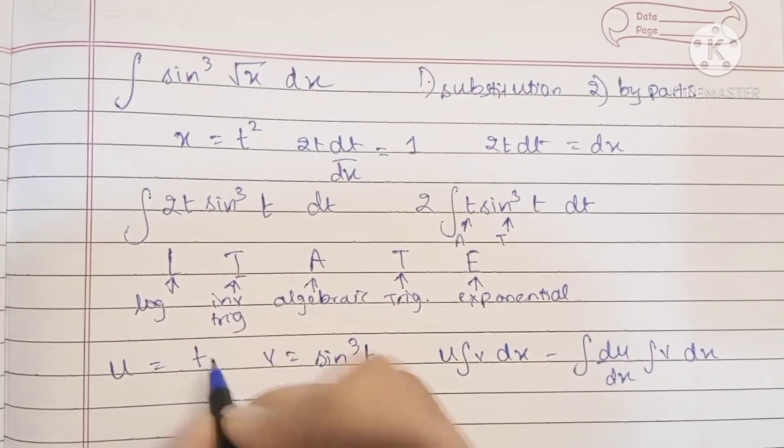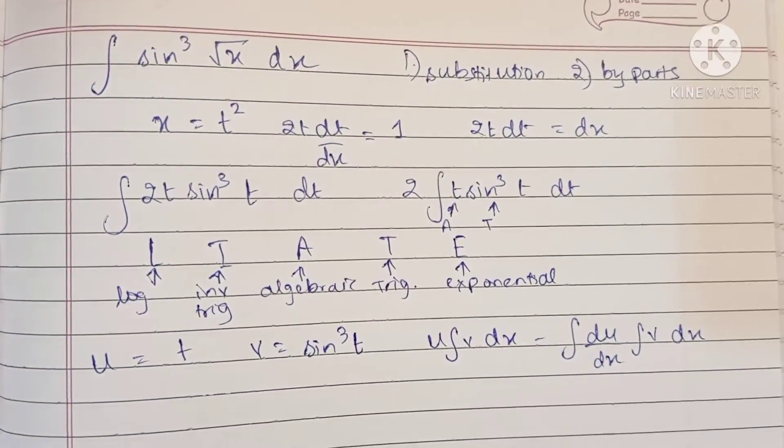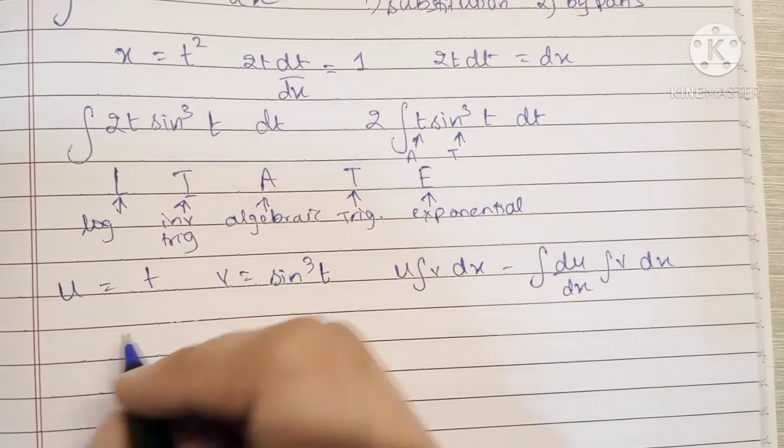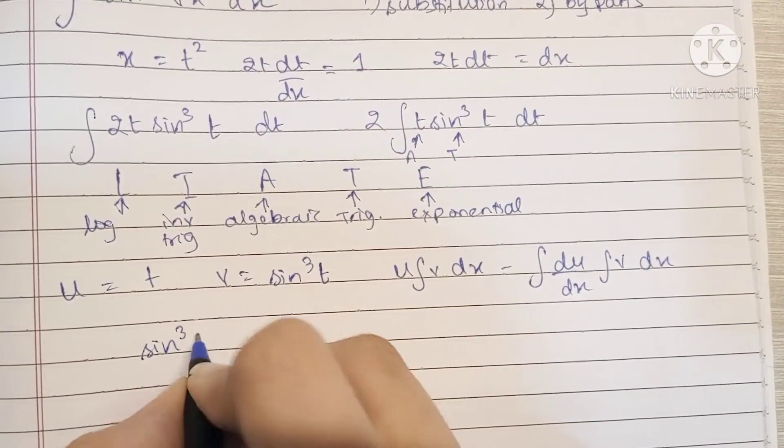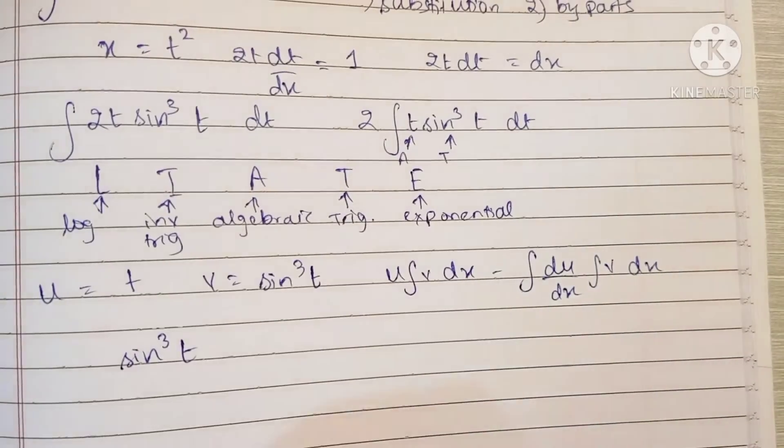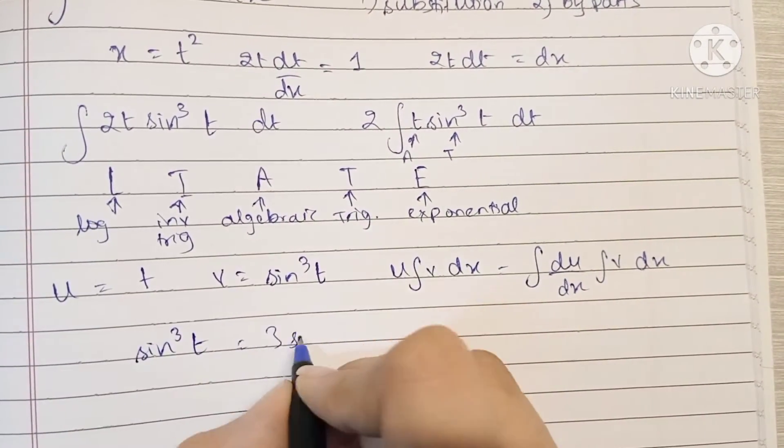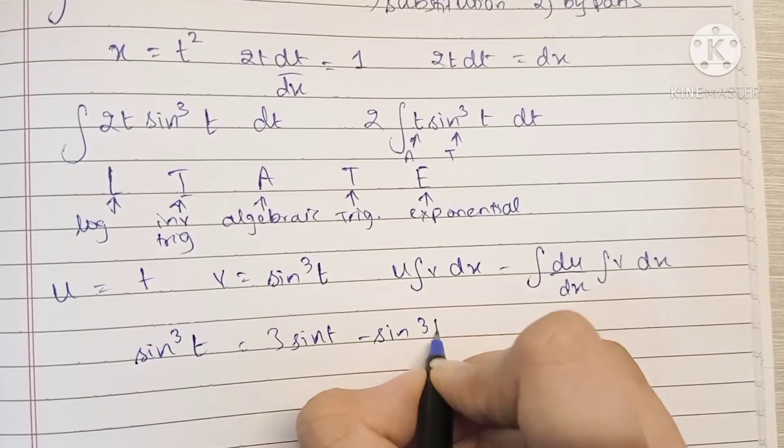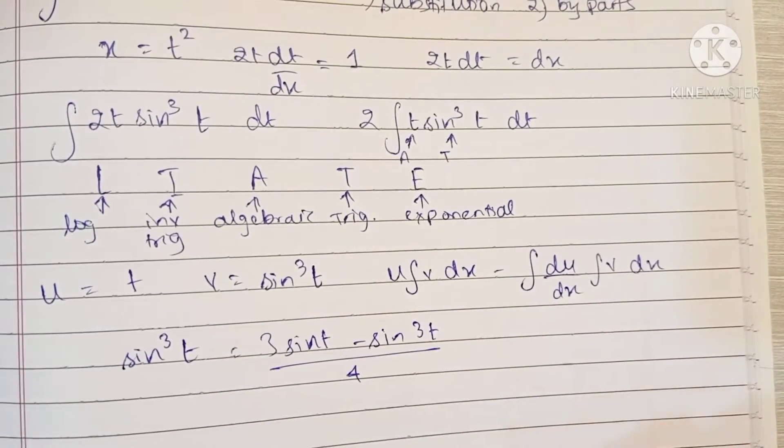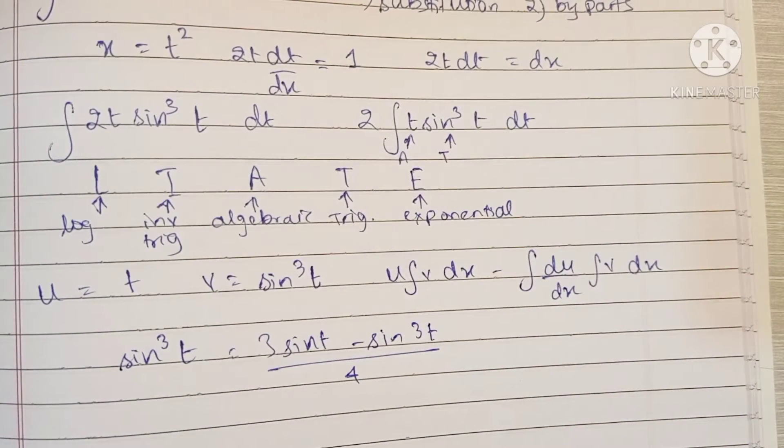Now let's replace in the formula, but before that we're going to substitute sine cube t as 3 sine t minus sine 3t upon 4. This is taken from the triple angle formula of sine, and this makes it easier to integrate because sine cube is also difficult to integrate.